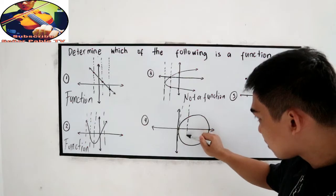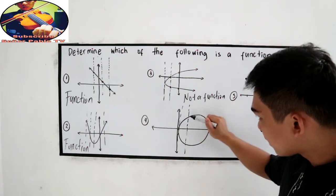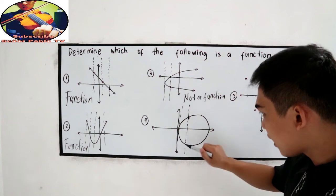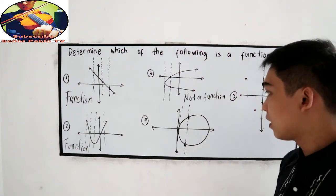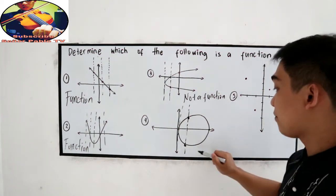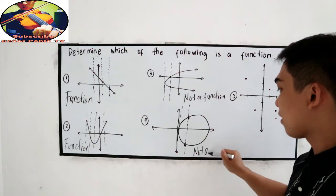on the right part of our quadrant, it touches here on the first quadrant and on the fourth quadrant. So two points, not a function.